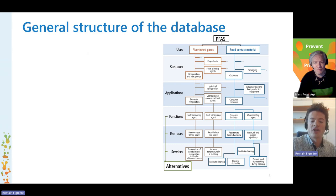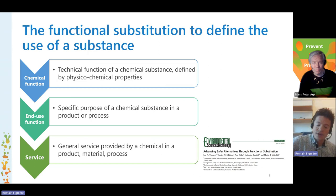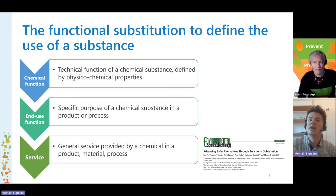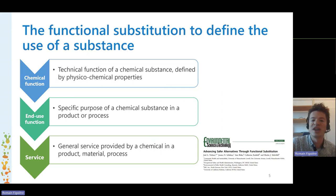To provide a bit more background, the functional substitution approach was defined in 2015 by Joel Tickner and colleagues. They suggested that when approaching the issue of substitution, one should consider three different levels of functions provided by a chemical. The first is the chemical function — the technical function of a substance defined by its physical-chemical properties, such as solvent, heat stabilizer, or heat transferring agent. The second level is the end-use function: the purpose that a chemical substance provides to a certain product or process — what does it bring to the product to have such a technical function? The third level is the service: what does it bring to us as consumers or to society in general to have a product with a specific chemical function in it?